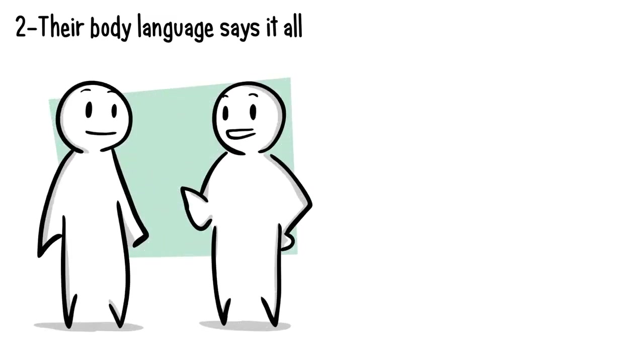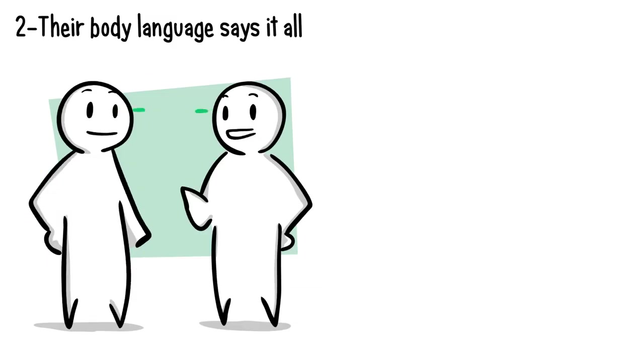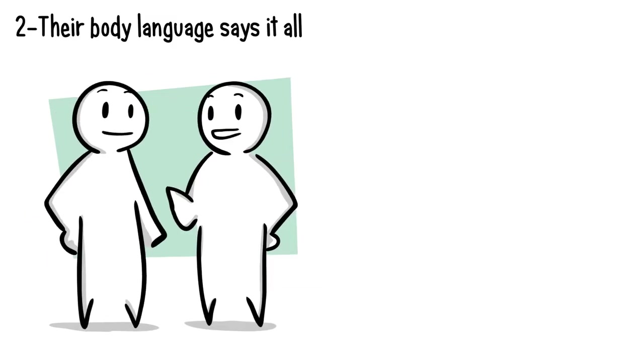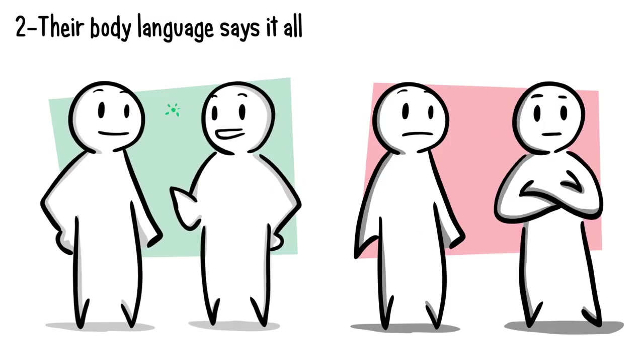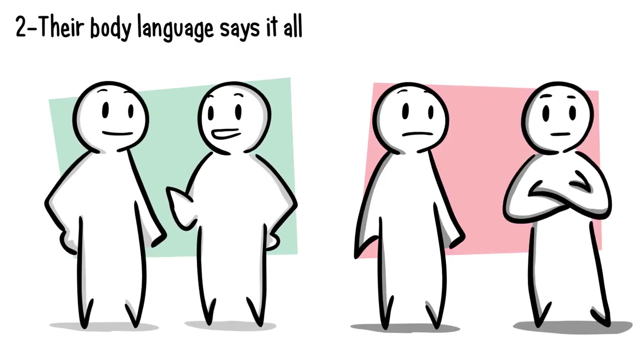Number two: Their body language says it all. When we like someone, we have a tendency to make eye contact, mirror their body language, and lean in closer. But when someone dislikes you, they will avoid eye contact, cross their arms, and lean away from you.